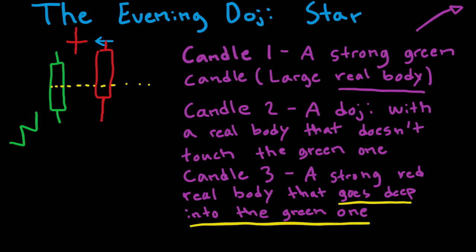So what I mean by going deep into is basically that the red one penetrates the green one all the way down to this level. So as a general mark, we usually want the red one to close below this yellow line right there. We also preferably want a gap between the real body of the doji and the real body of the red one. So we preferably want a gap here in between, and in this case we actually have it. And hopefully, if this works out as a reversal pattern, the trend should be downwards after this.